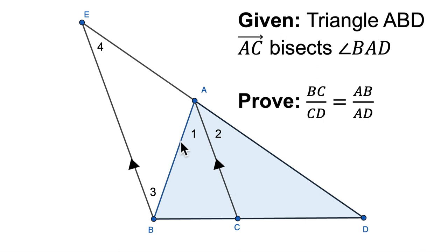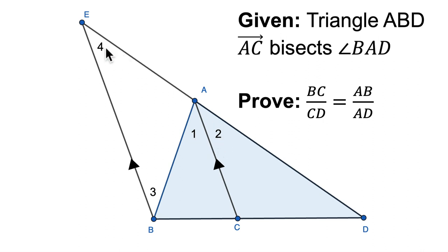Those angles give us everything we need. In triangle ABE, if angle 1 is congruent to angle 3 and angle 2 is congruent to angle 4, we also know that angles 1 and 2 are congruent because AC bisected the angle. So angle 1 equals angle 2, which equals angle 4, and angle 1 also equals angle 3 — all four angles are congruent to each other. If angles 3 and 4 are congruent to each other, then the sides across from them are equal: side AE is congruent to AB.